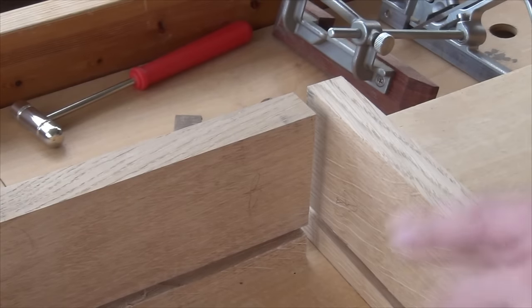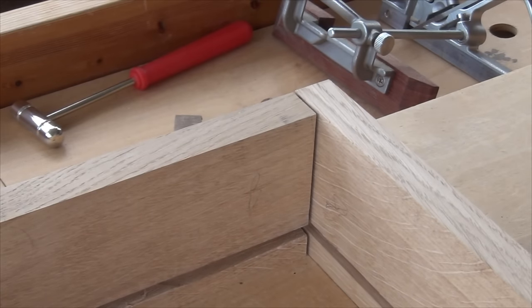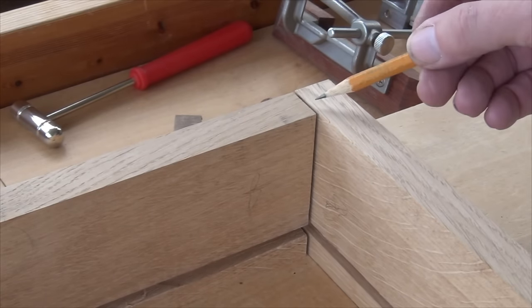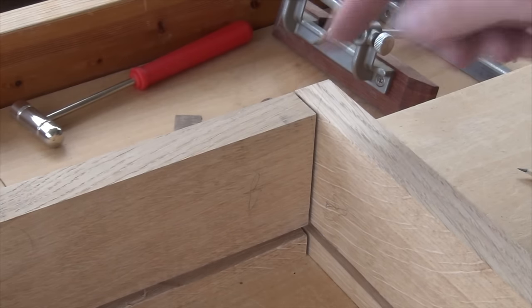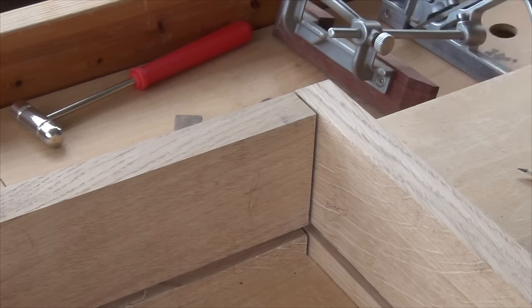I'm going to join these two boards together in the corner with a mitred dovetail. We're going to end up having what looks like a mitre there, but that only extends back a little way, and we've got dovetails for the rest of the joint.